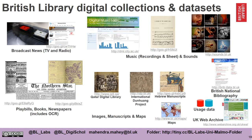We have a number of digital collections and datasets at the British Library. We have broadcast TV and radio news. We have playbills, books and newspapers. We have music — digitized music such as recordings and sheet music — and sounds that have been recorded such as animal sounds and machine sounds. We have images, manuscripts and maps. The Qatar Digital Library has a large collection of digitized images and manuscripts from the Middle East. The International Dunhuang Project has digitized materials from China, Mongolia and Tibet. Hebrew manuscripts contain a very large collection of digitized Hebrew manuscripts. We have a large number of digitized maps which are also geo-referenced. The British National Bibliography contains descriptions of our holdings. We also collect usage data and we are the home of the UK Web Archive, where we have been collecting websites from all UK web domains.